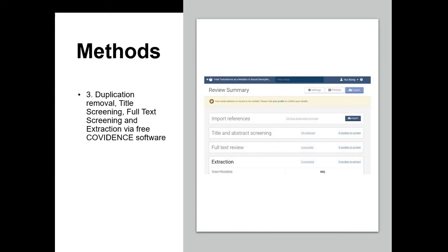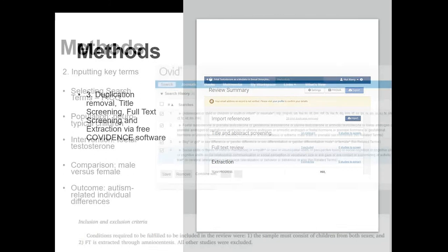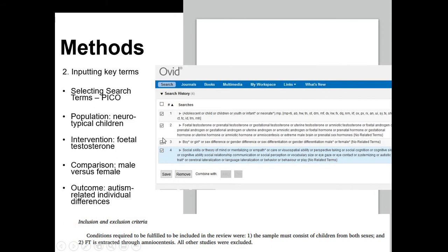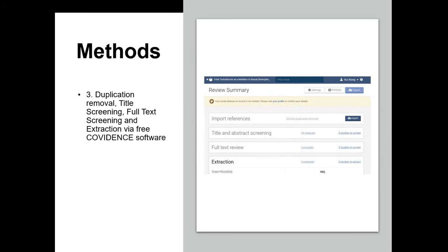Once we had a nice pool of studies from Ovid, which is very user-friendly, you put in all the search terms related to PICO independently in different lines. Once they are put in, they're remembered by the system. Then you can class them together. Take them off one by one, then search with a combined AND term.